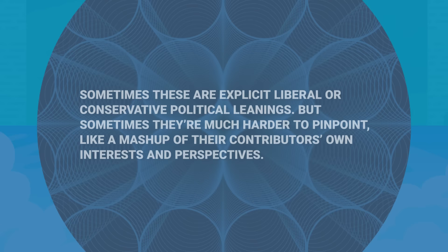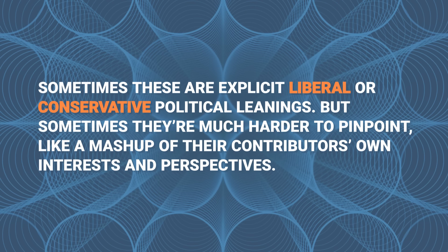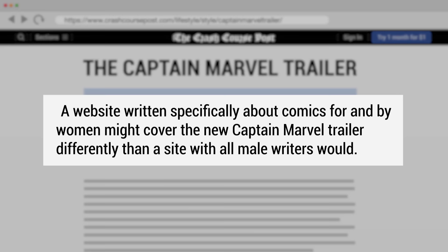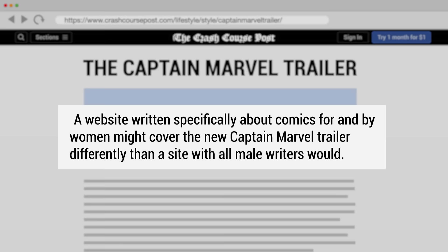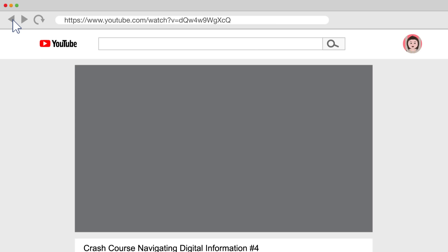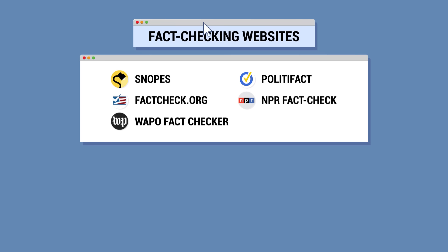However, it's important to note that many online news organizations have their own point of view. Sometimes these are explicit liberal or conservative political leanings, but sometimes they're much harder to pinpoint — like a mashup of their contributors' own interests and perspectives. A website written specifically about comics for and by women might cover the new Captain Marvel trailer differently than a site with all male writers would, for instance. We'll talk more about authorial perspective in our next episode.